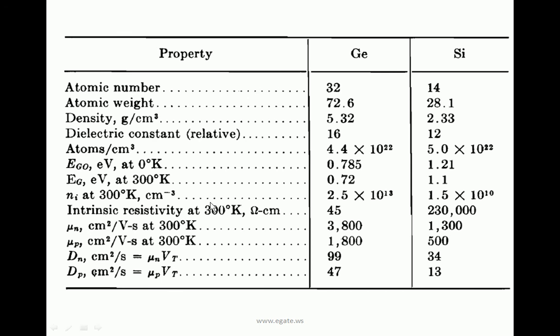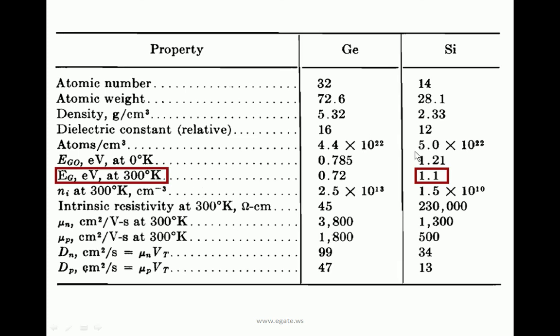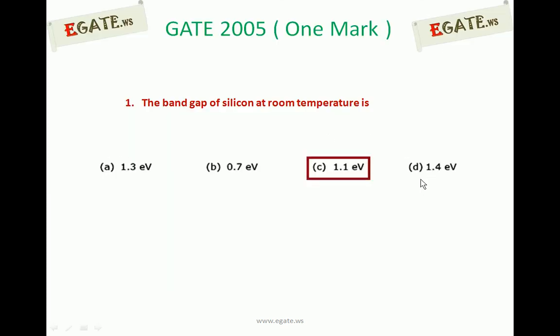These are standard values we must remember. According to our question, energy gap at room temperature is 1.1 electron volts. So the correct answer is (c) 1.1 electron volts. Thank you.